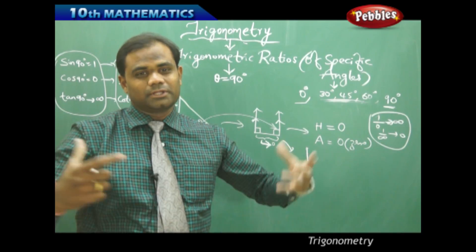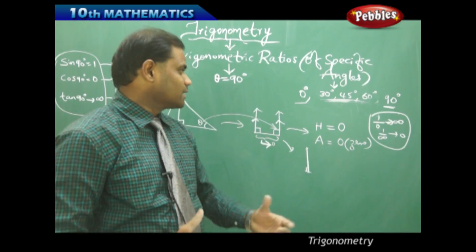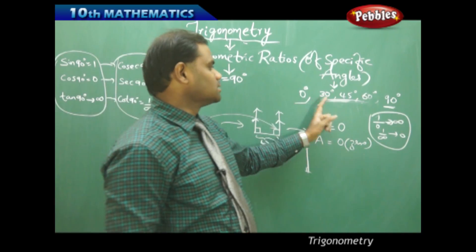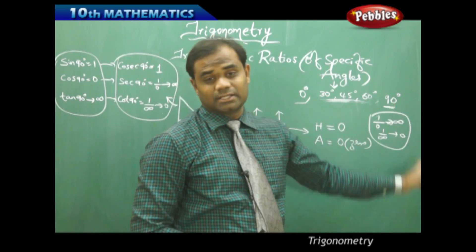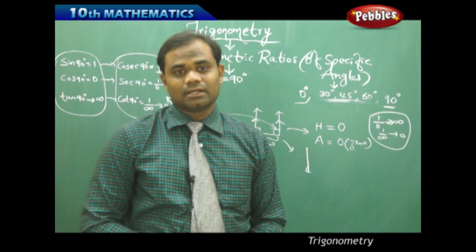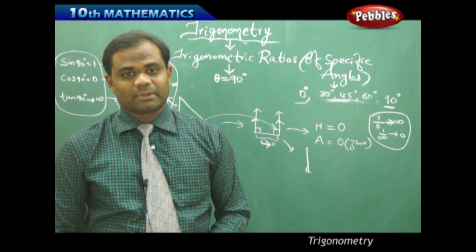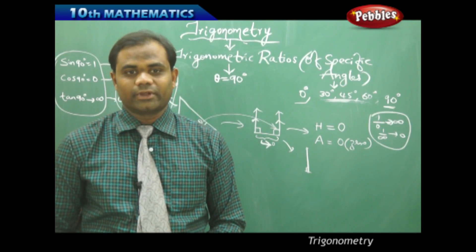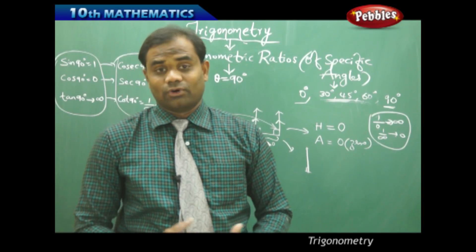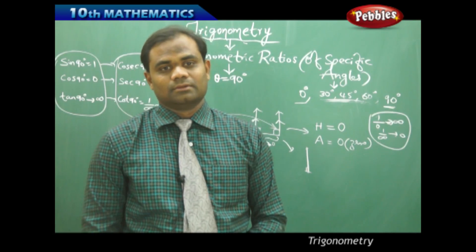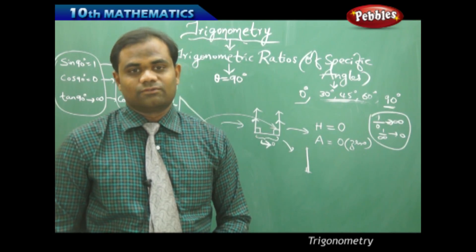Now let's club all the special angles — 0, 30, 45, 60 and 90 — and write all their respective trigonometric ratios in tabular form.